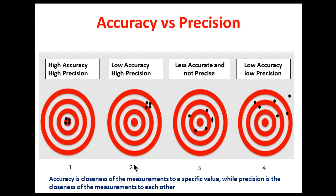In the second bullseye example, our true value is the aim. Our measurements are not close to the aim, so it is low accuracy. But the readings are all close to each other, so it is considered as low accuracy and high precision.